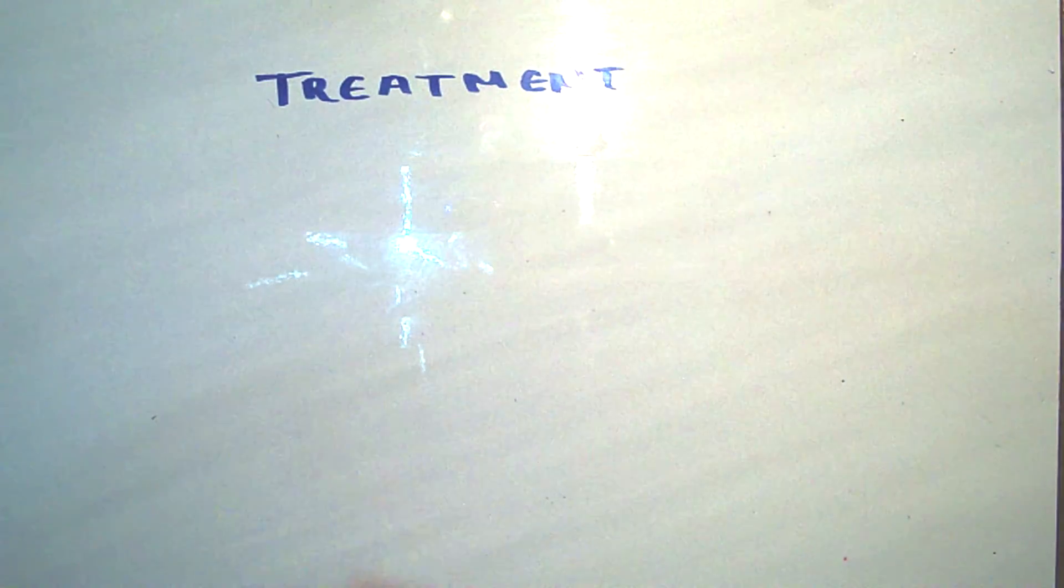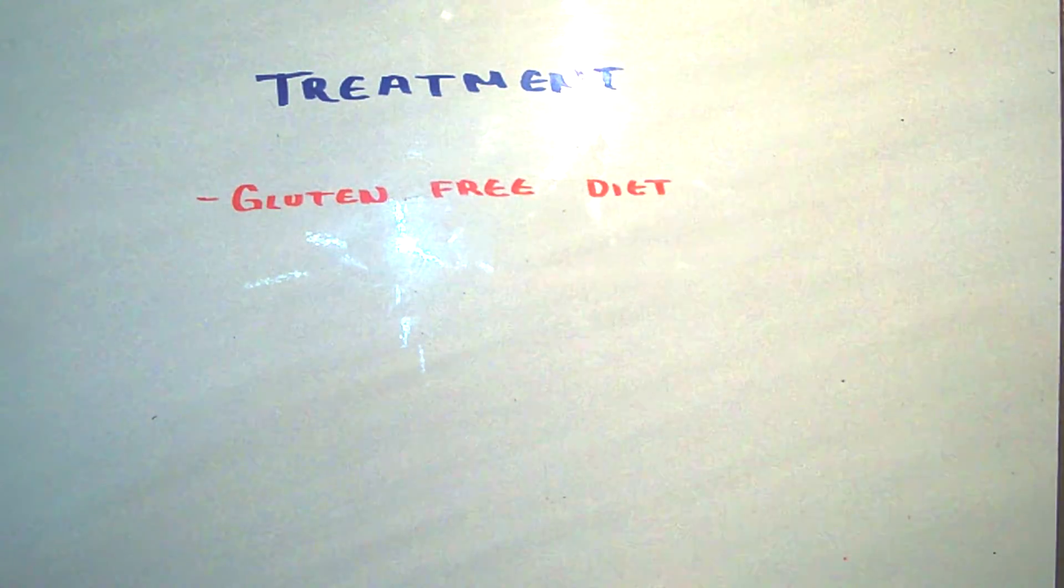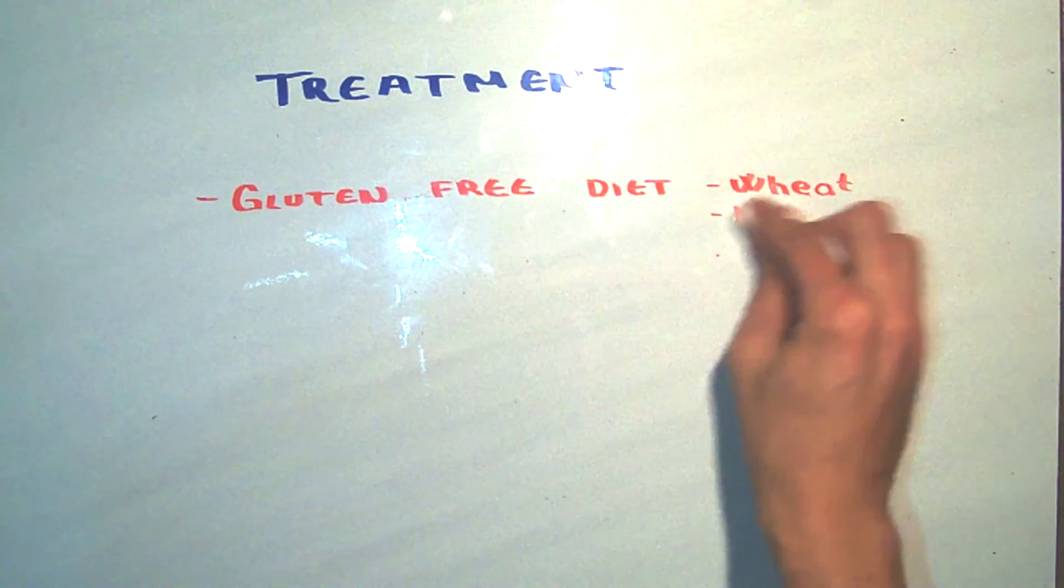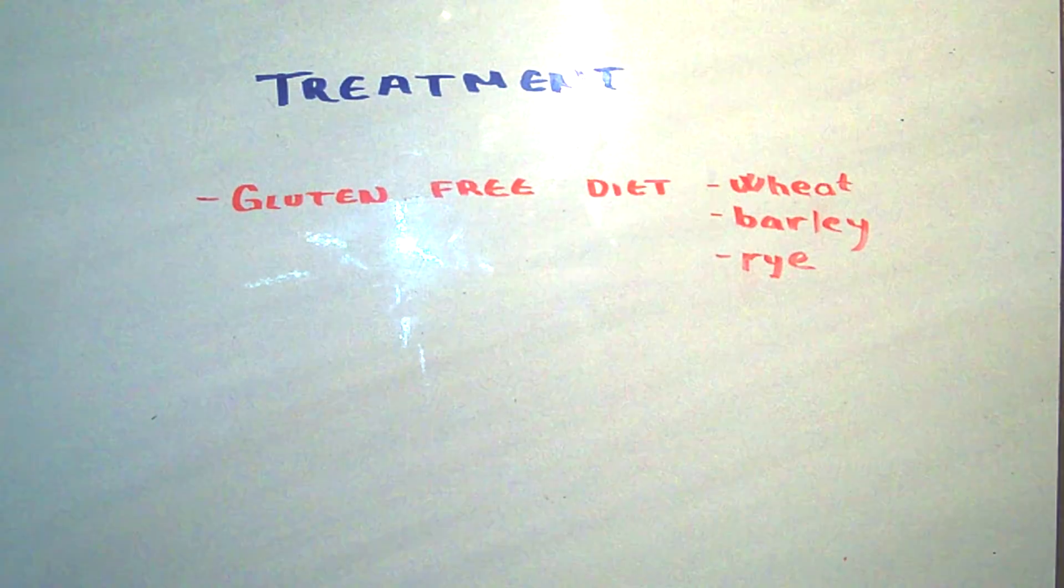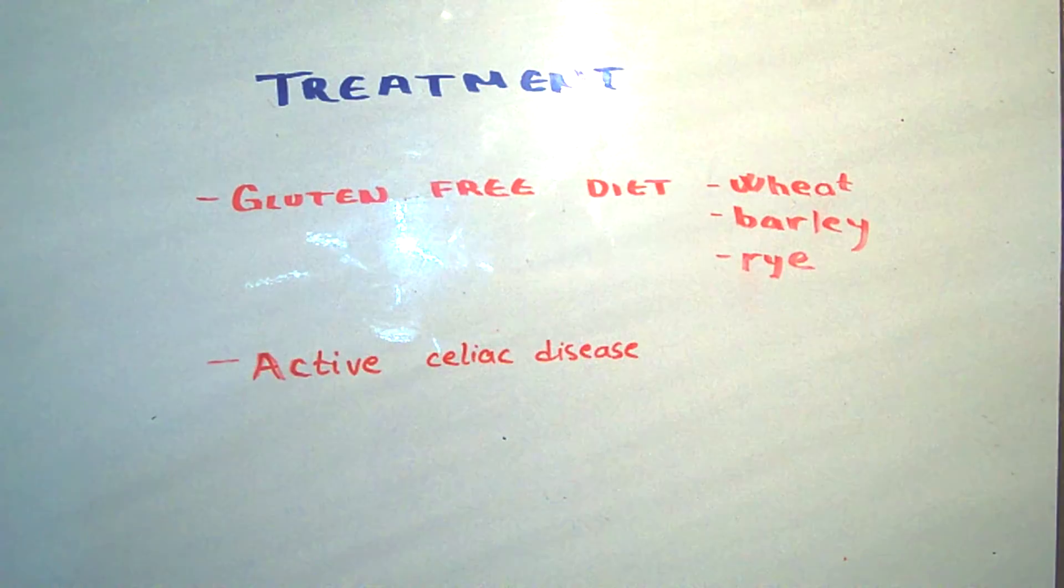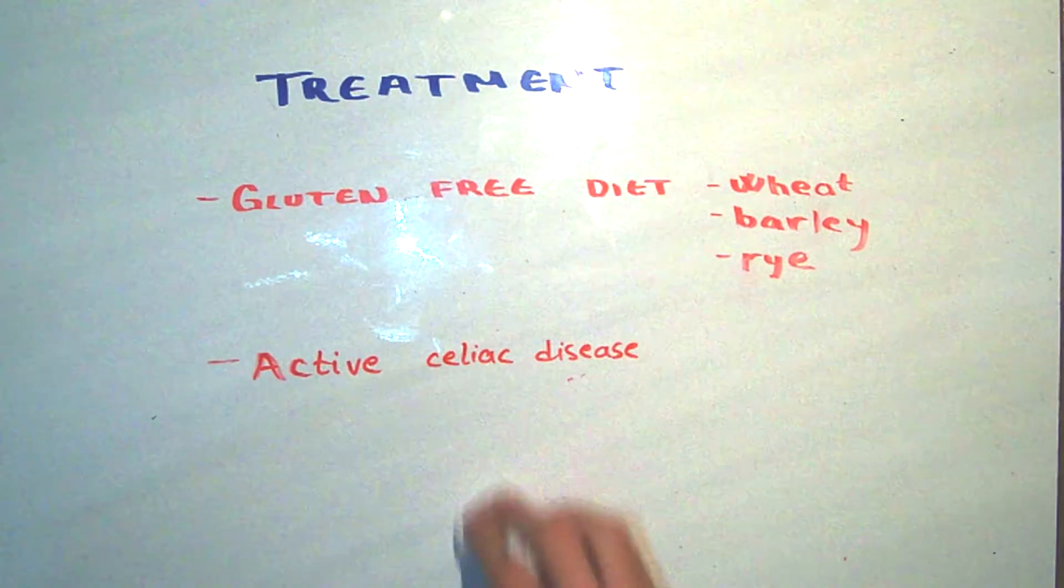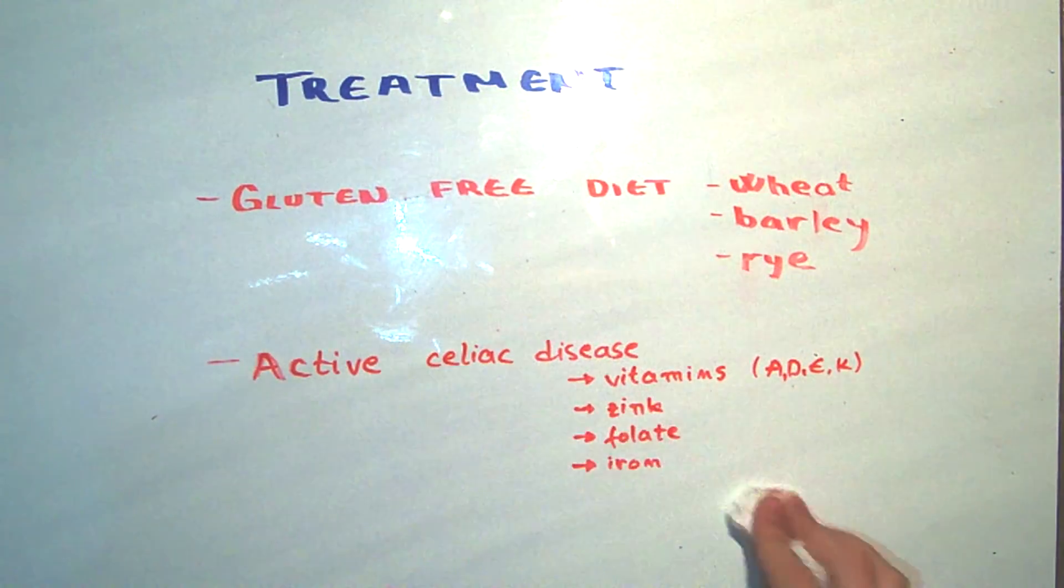And by now, I am sure that you have guessed the treatment. The patient should only avoid food that have gluten in them, such as wheat, barley and rye. Sometimes, if there is an active celiac disease, the patient should take some vitamins, zinc, folate and iron.